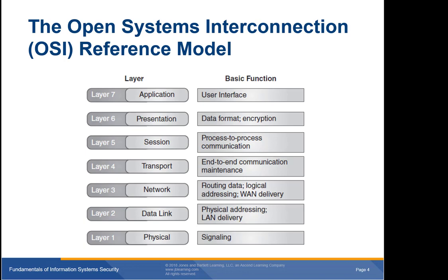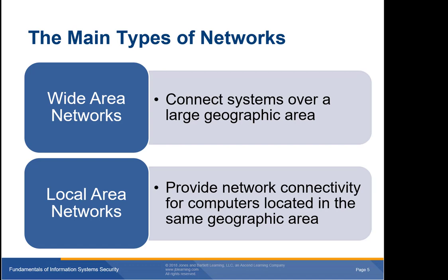The OSI reference model enables developers to produce each layer independently. If you write an email program at the application layer, you only need to worry about getting information down to the presentation layer. Similarly, if you're making cables at the physical layer, you just need to satisfy the requirements of the data link layer. A good working knowledge of networks and how to secure them is crucial to protect your organization from network failure or a data breach.